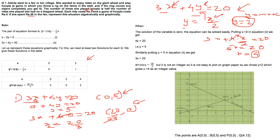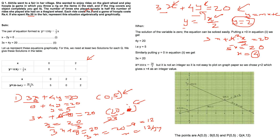Instead, let us choose a convenient value. Put Y = 2: then 3X + 4×2 = 20, so 3X + 8 = 20, giving 3X = 12 and X = 4. So (4, 2) is another point. We now have two nice points: (0, 5) and (4, 2). These are the two ordered pairs we will use to draw the line for 3X + 4Y = 20.